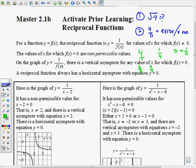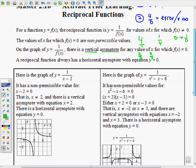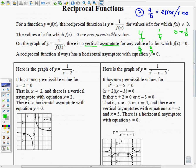When you're going to graph this reciprocal function, it's in the form of 1 divided by what could be a function in the denominator. There is a vertical asymptote for any value of x for which f(x) = 0. The toughest thing is actually pronouncing that word asymptote. A reciprocal function always has a horizontal asymptote with equation y = 0. If the numerator is 1 and it's over some function, you will always get a horizontal asymptote of y = 0.